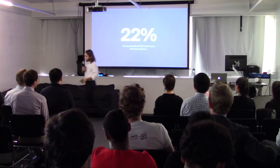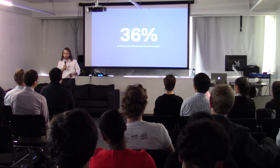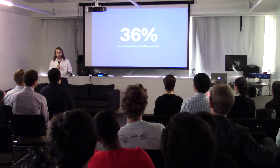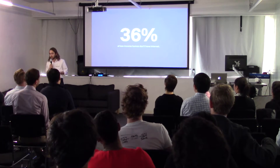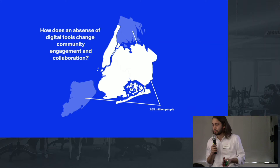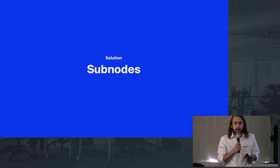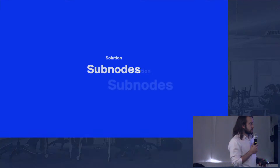We're looking at a particular statistic in New York City and issues around the world of Internet accessibility and reliability. For New York City specifically, a fifth of the city doesn't have reliable Internet at home. So how can we think about the digital tools that we use every day for collaboration and how these communities can use these?